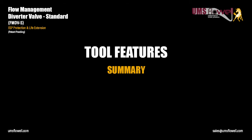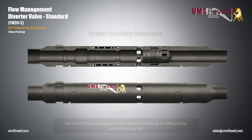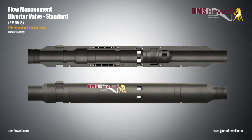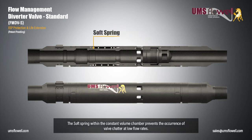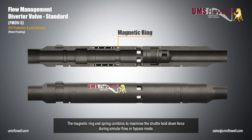Tool features summary. UMS Flow Well piranha lock body connectors allow torque through the FMDV and also prevent thread back off. A constant volume sealed spring chamber isolates the spring from well debris. The soft spring within the constant volume chamber prevents the occurrence of valve chatter at low flow rates. The magnetic ring and spring combine to maximize the shuttle hold down force during annular flow or bypass mode.